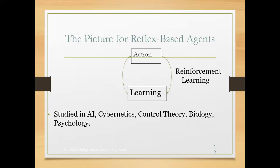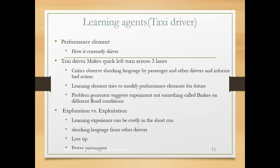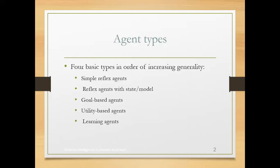That's all for today's session. To summarize: simple reflex agents concentrate only on the present state of the sensor. Model-based reflex agents use both present and past state of the environment. Goal-based agents specify whether after performing the action you will reach your destination. Utility-based agents measure how much happiness you will get after performing the action. And learning agents, based on feedback and critic, improve knowledge and perform actions in a better way. Thank you students for listening — in the next session we will meet with new concepts.